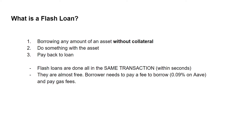A couple of characteristics: flash loans are done all in the same transaction, so those three steps — borrowing, doing something with the asset, and paying back the loan — happen within seconds. They're not technically free; you can borrow millions without collateral, but the borrower still needs to pay a fee to the lender. On Aave, that fee is 0.09%, and borrowers also have to pay gas fees.